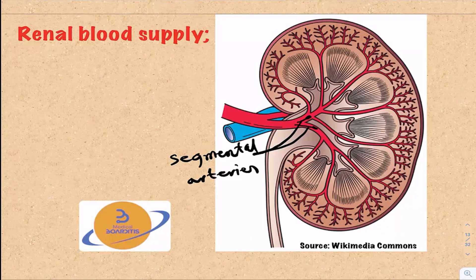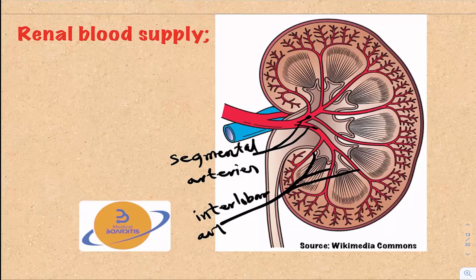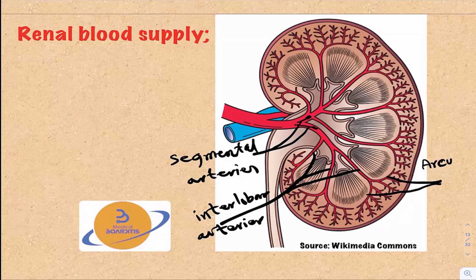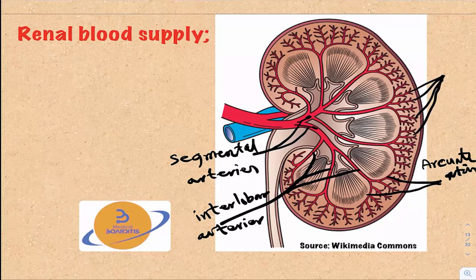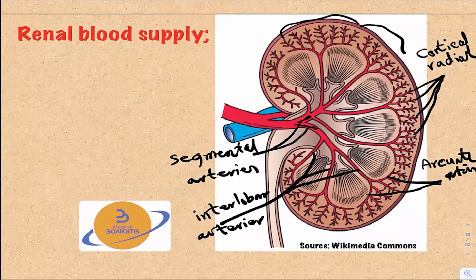The segmental arteries divide into interlobar arteries. The interlobar arteries then divide into arcuate arteries. Finally, the arcuate arteries give off cortical radiate arteries — also called interlobular arteries — into the cortex. The cortex is heavily supplied compared to the medulla, which is why the cortex receives almost 90% of the blood supply to the kidney.